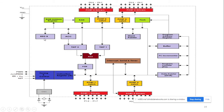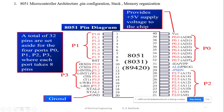Register B is used together with the accumulator for multiplication and division operations. Then there is the stack pointer and the PSW - the Processor Status Word register. The 8051 has four ports: Port 0, Port 1, Port 2, and Port 3.